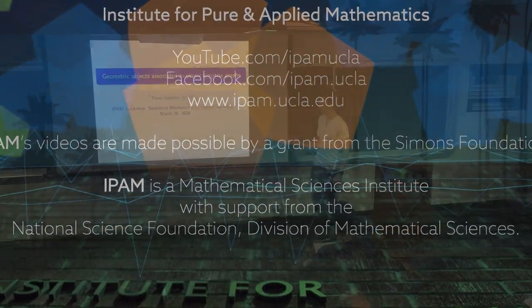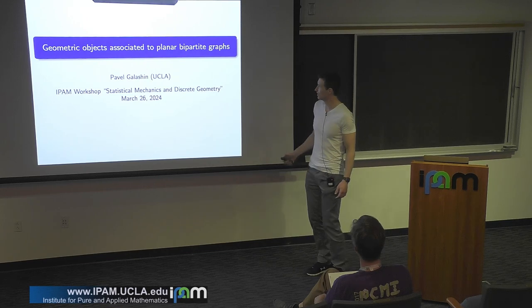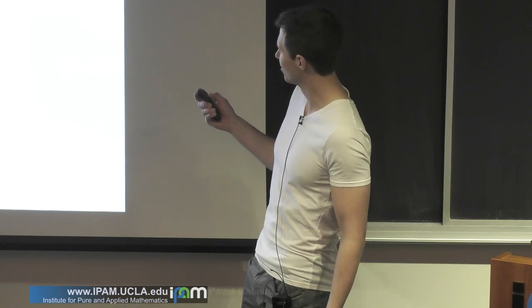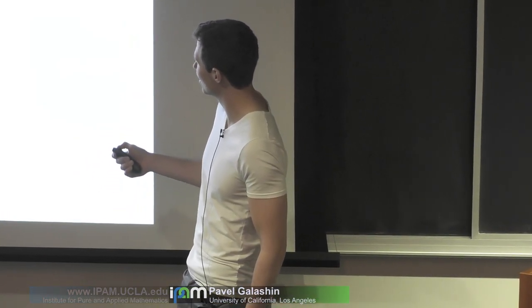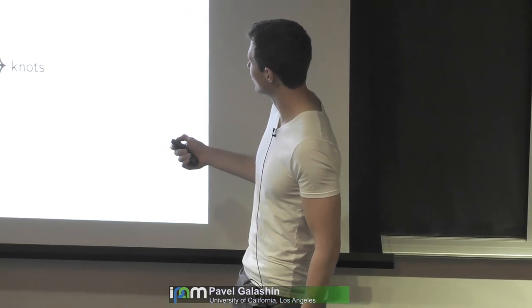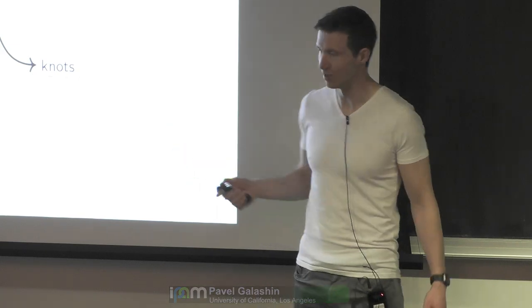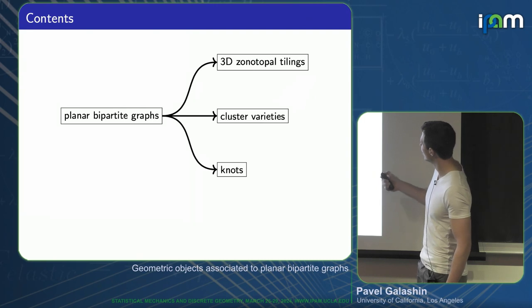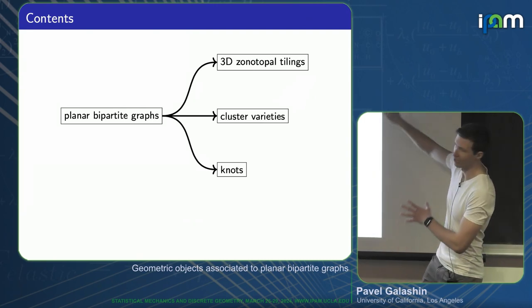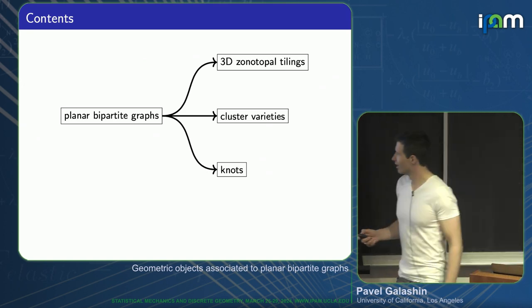Thanks a lot for the invitation. I'm going to talk about basically some connections. IPAM is about connections, so these arrows represent connections. I'm assuming that a lot of people care about bipartite graphs in the plane, and maybe about some subset of these things. I'm going to tell you about the three geometric objects you can associate to a planar bipartite graph in this order.